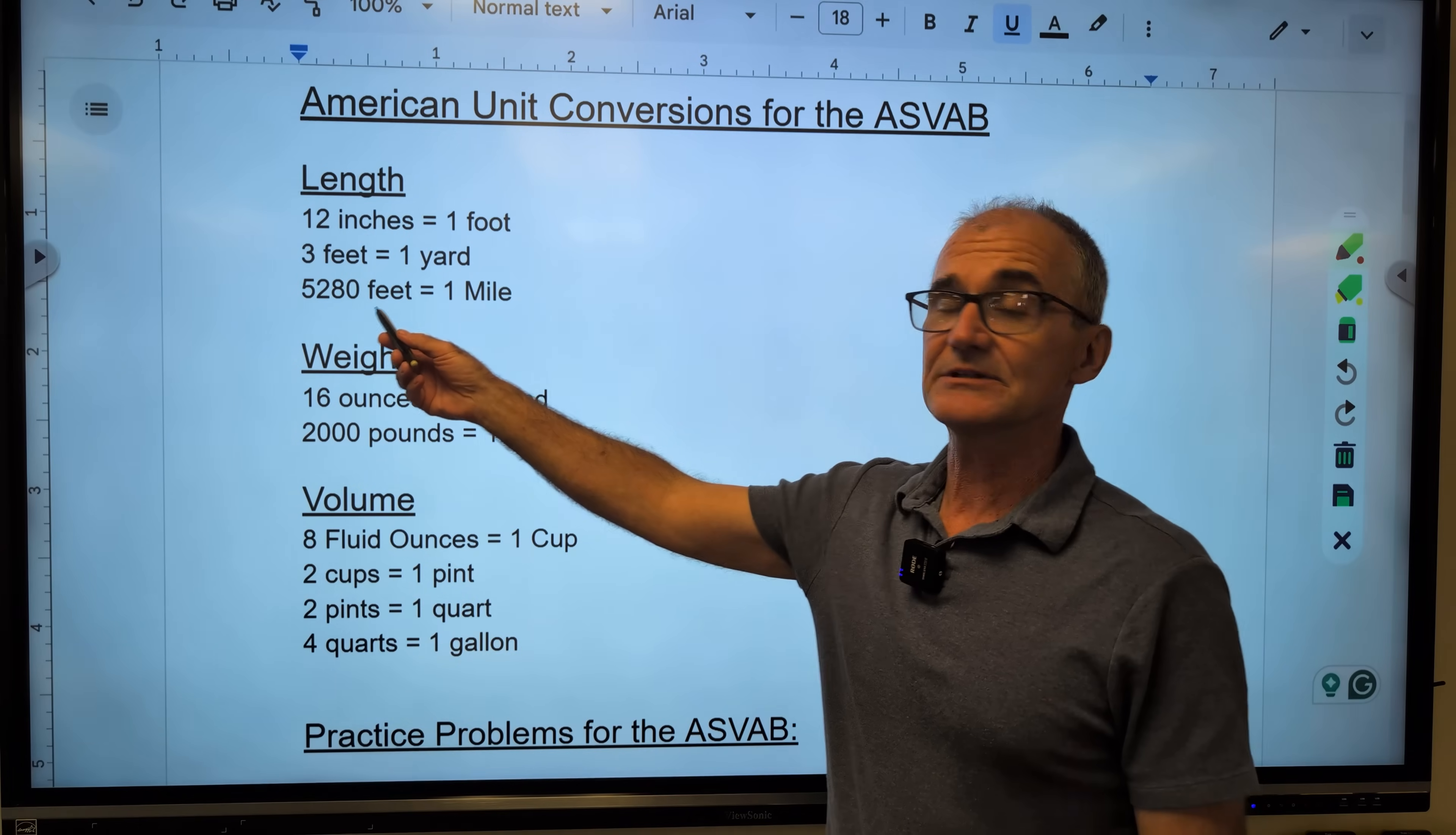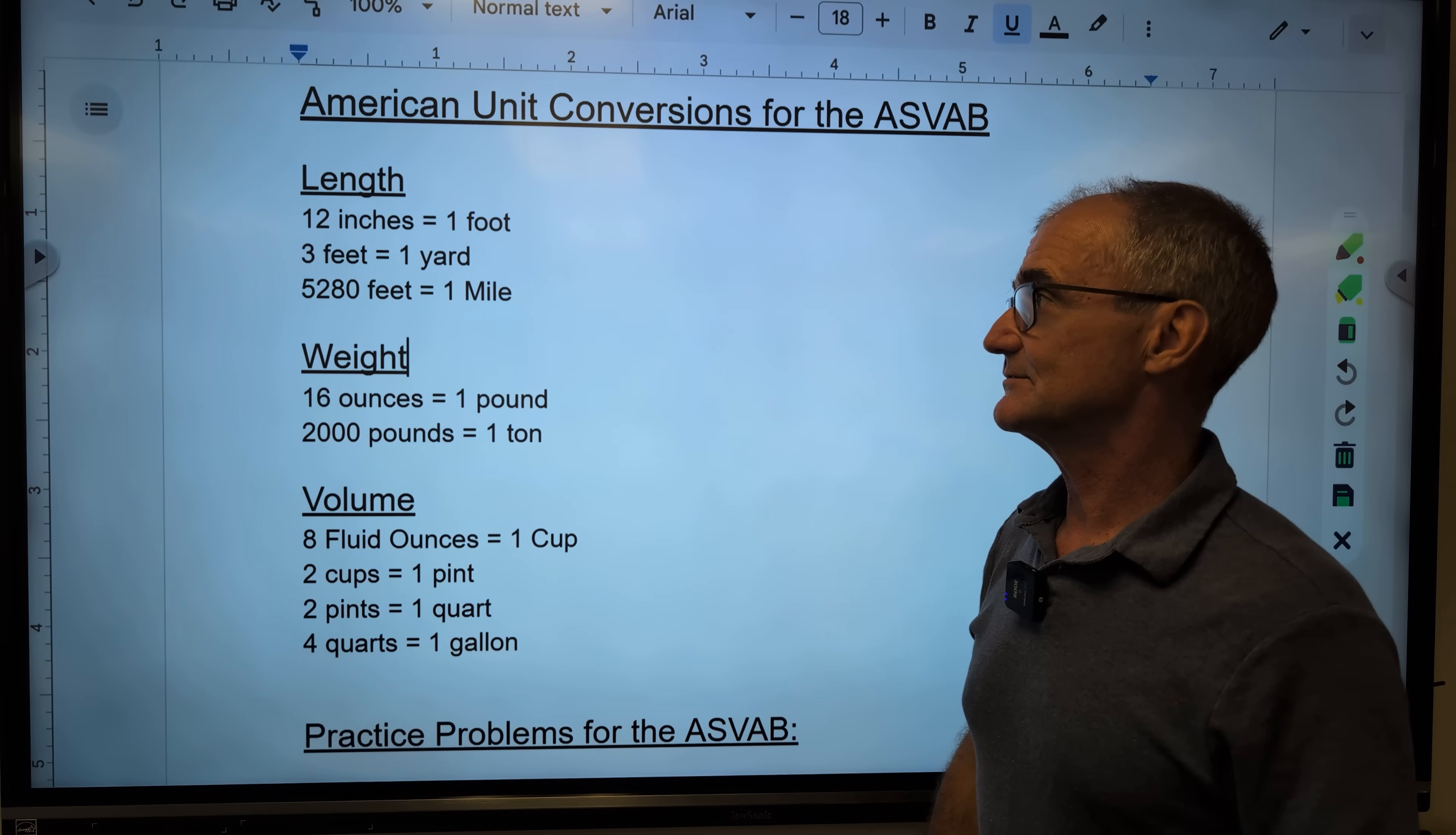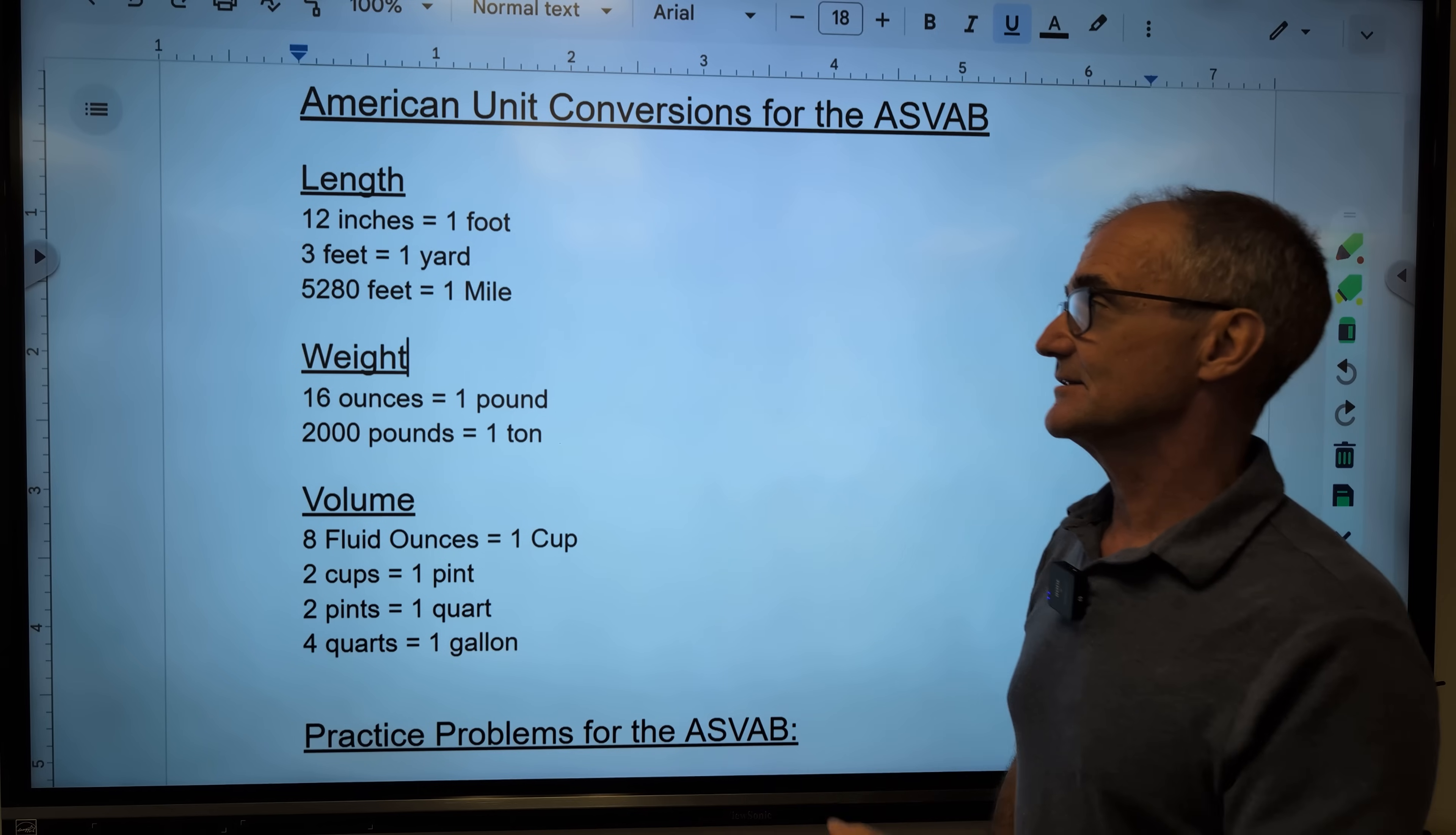And then this is a really hard one to remember. There are 5,280 feet in a mile. I approximately remember it because Denver is a mile high city, and it's about 5,000 feet above sea level. So again, in length measurement, 12 inches to the foot, three foot to the yard, and then 5,280 feet to the mile.